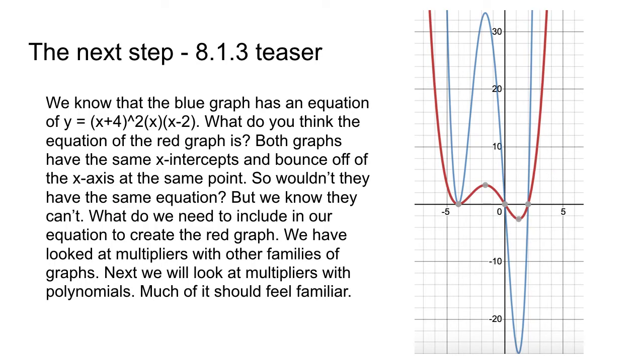When we look at these two graphs, I have a red graph and a blue graph here, and it looks like their equation should be the same from what we know. They both share (-4, 0) as an x-intercept. They both share (0, 0) as an x-intercept or a root, and they both share (2, 0) as a root. They also bounce off of the x-intercept at negative 4. So from what we know so far, these two graphs should have the same equation, but we know that they cannot.